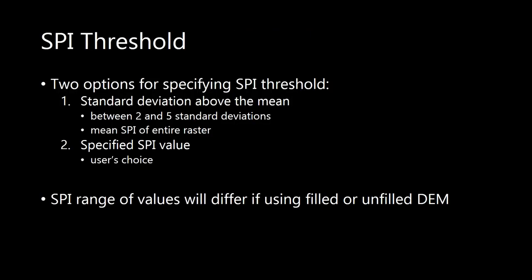The second thing to pay attention to is how you specify the stream power index threshold. One option is to say how many standard deviations above the mean you want it to be before a grass waterway is sited. You can choose between a range of two and five standard deviations, taking a half standard deviation step each time. This considers the mean of the stream power index raster for the entire raster. These rasters actually expand to a thousand meter buffer beyond the watershed boundary, so these values can vary a little bit and may not be as accurate as you're looking for.